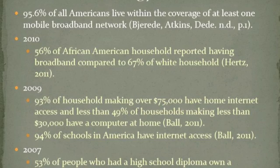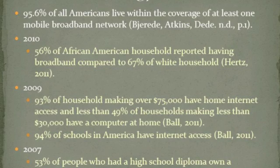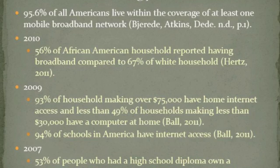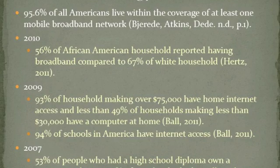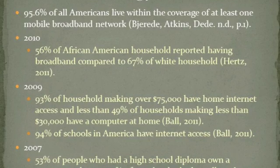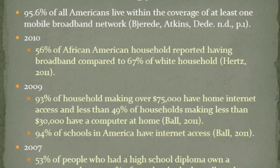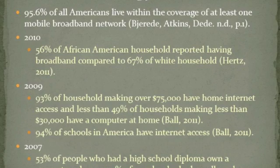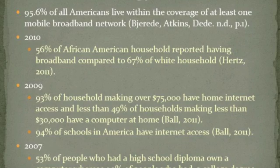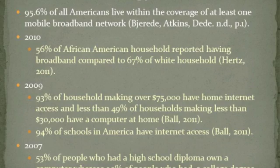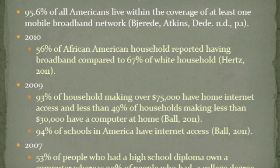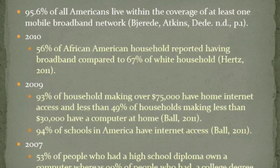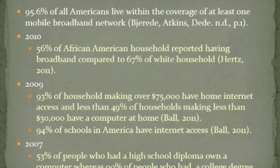Currently, 95.6% of all Americans live within the coverage of at least one mobile broadband network. Multiple studies have been conducted looking at different facets of society: race, wealth, and education. In 2010, laptop ownership as well as home broadband access just about broke even between African Americans and whites in America — 56% of African American households reported having broadband access compared to 67% of white households. In 2009, a study based on income levels showed a positive relationship between household incomes and home internet access. In 2007, a study based on education level determined that the higher a person's education level was, the more likely they were to own a computer.